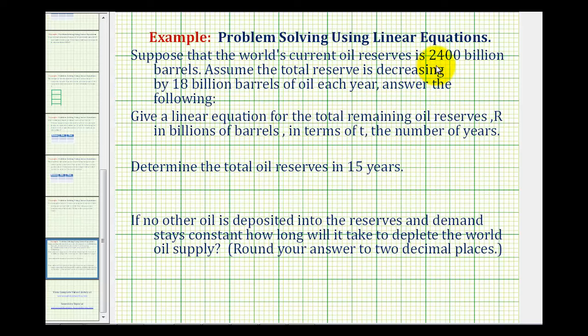Notice how we're starting with 2,400 billion barrels of oil, but it is decreasing at a rate of 18 billion barrels per year. So the equation would be R, or the number of billion barrels of oil, is going to be equal to the starting amount of 2,400 billion barrels. And then since it's decreasing by 18 billion barrels a year, it would be minus 18 times t, where t is the number of years.